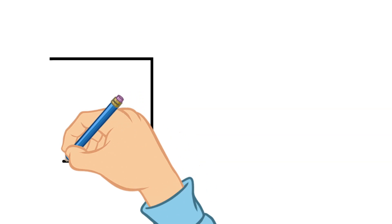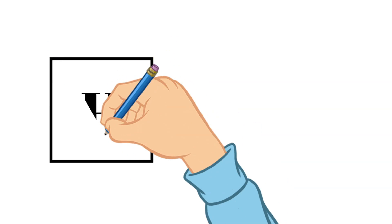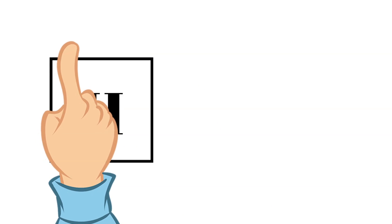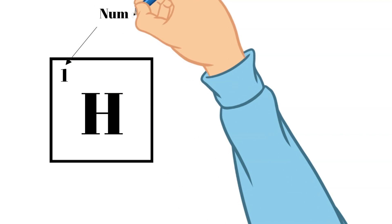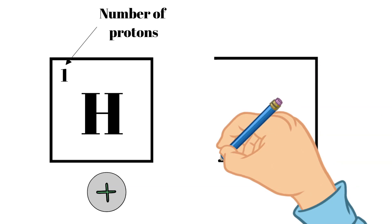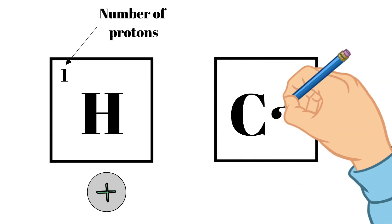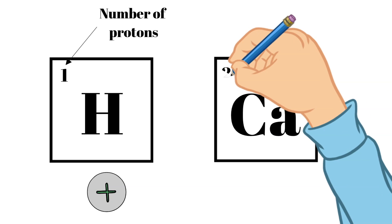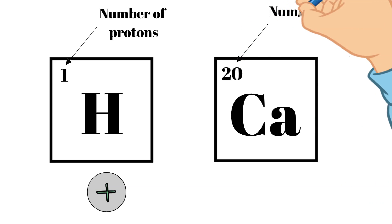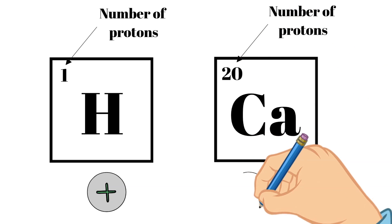The atomic number on the periodic table is located in the upper left-hand corner of the element box, and it refers to the number of protons in the atom. Now the number of protons in the hydrogen atom is one, because in that box you can see that there is a one in the left-hand corner. That means that hydrogen has one proton. Similarly, if you were interested to see the amount of protons in calcium, you would also look in that upper left-hand corner.